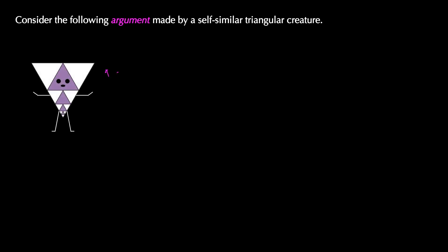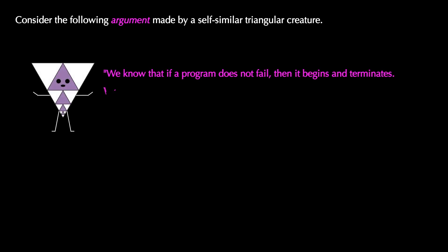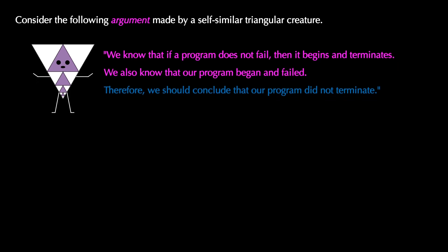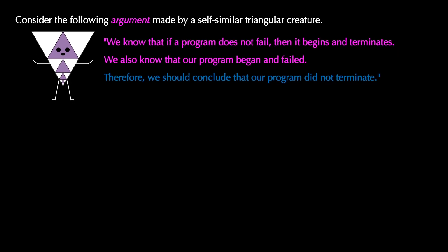Let's use our knowledge about formal implication and deduction laws to see if we can find if arguments are valid or if they have flaws. Recall the argument from the self-similar triangular creature: if a program does not fail, then it begins and terminates. Our program began and failed. Therefore, our program did not terminate.